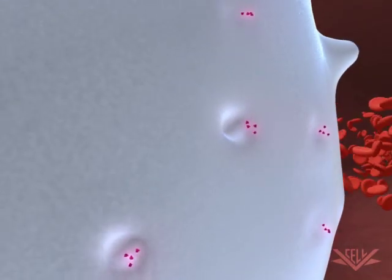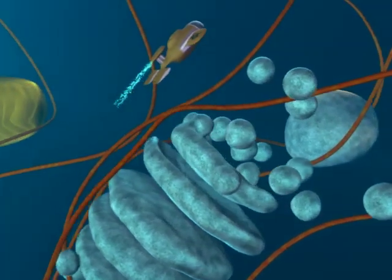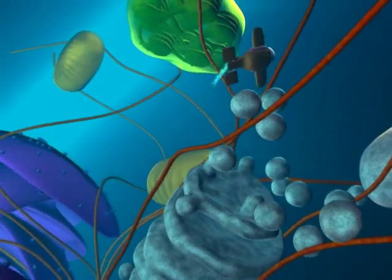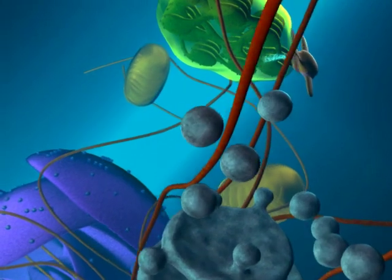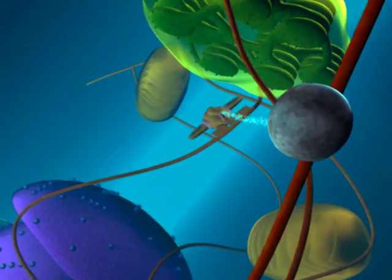Once proteins have been translated, they can also be delivered to other organelles in the cell, such as the mitochondria and the chloroplast. Delivery here is by a different process.